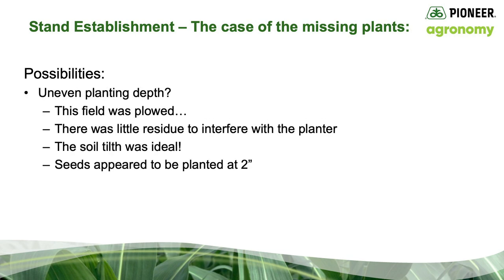The second possibility: uneven planting depth. This field was plowed, there was little residue to interfere with the planter, the soil tilth was ideal, and seeds appeared to be planted consistently at a two-inch depth.